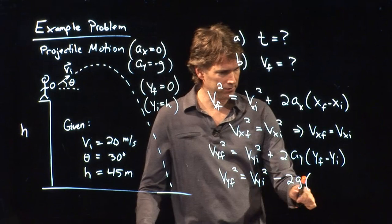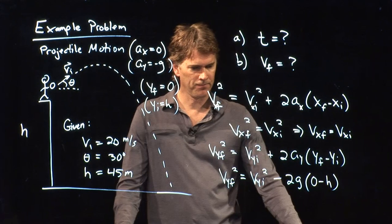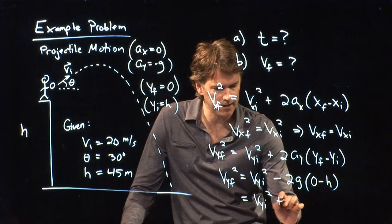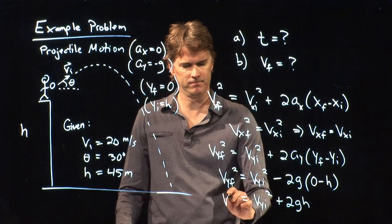Y initial, we told you, was h. And so it looks like we have everything we need here. It's zero minus h. So this simplifies a little bit. We have vyi squared plus 2gh.